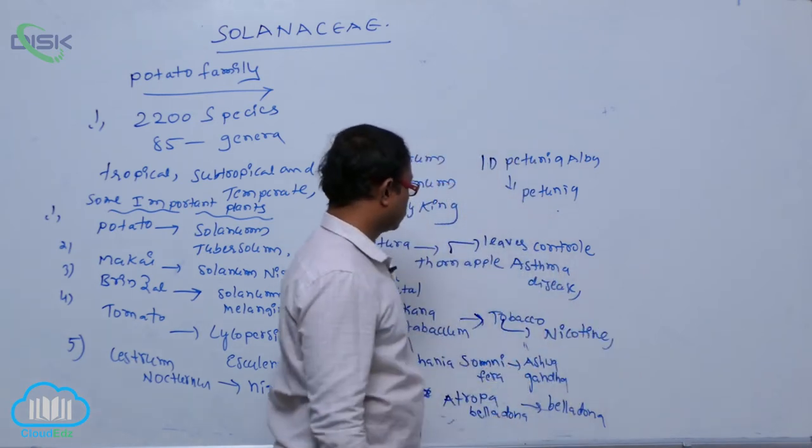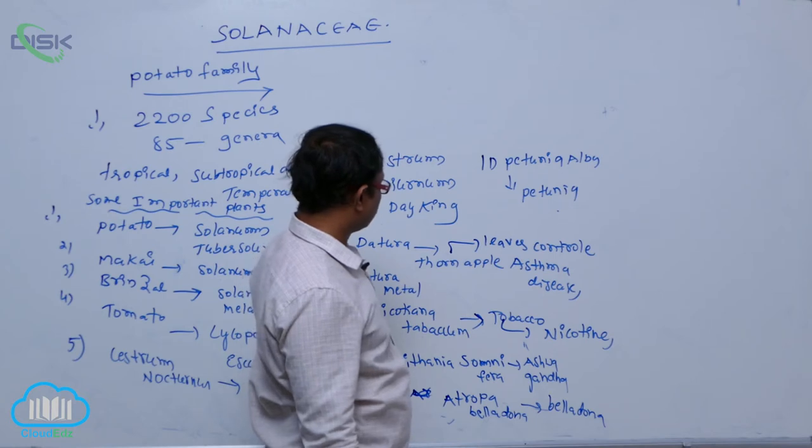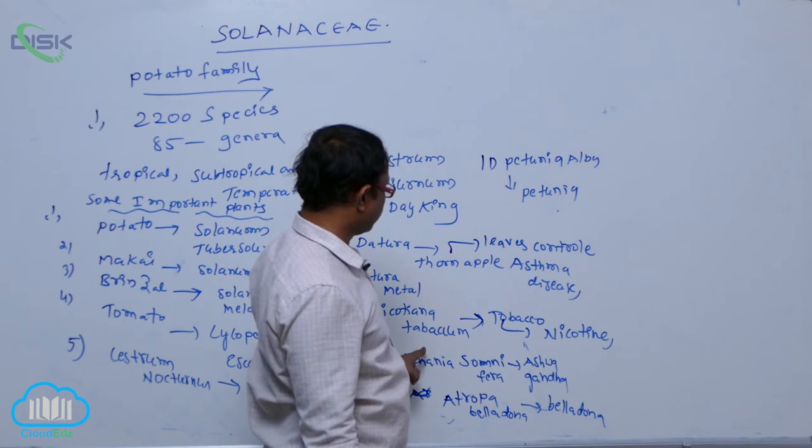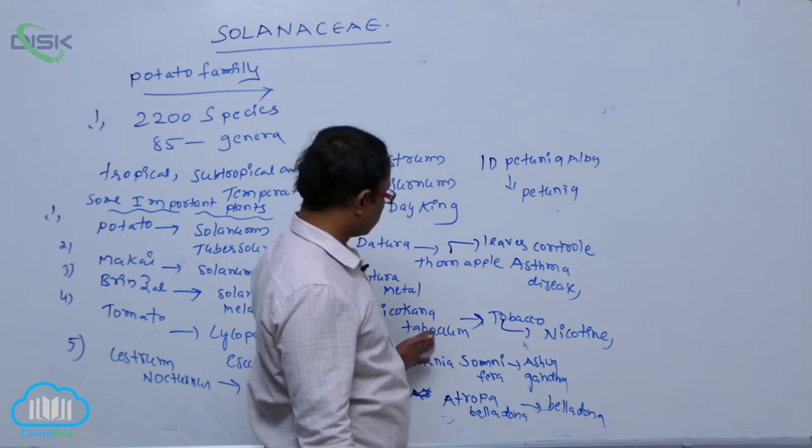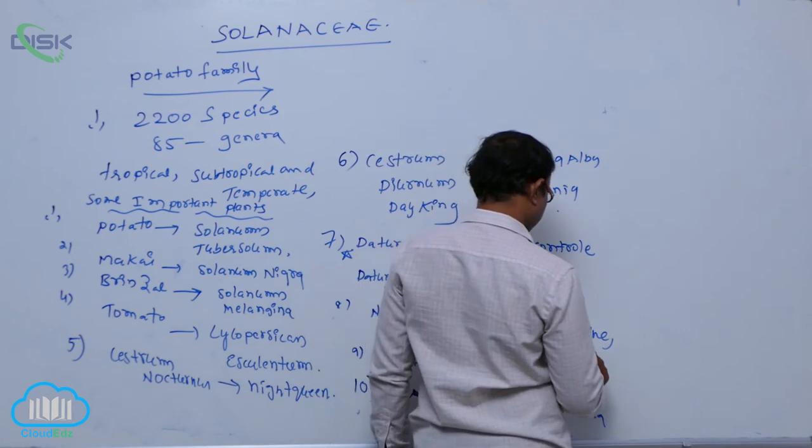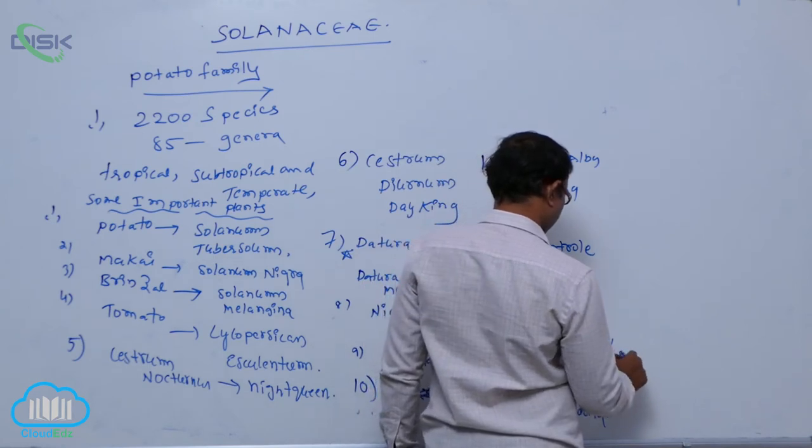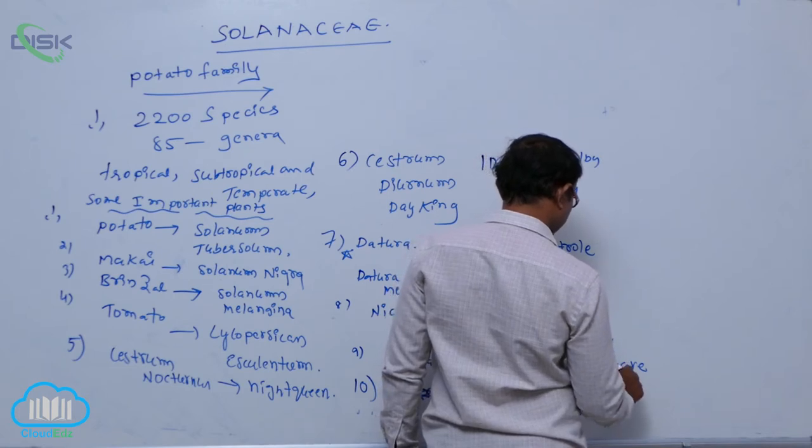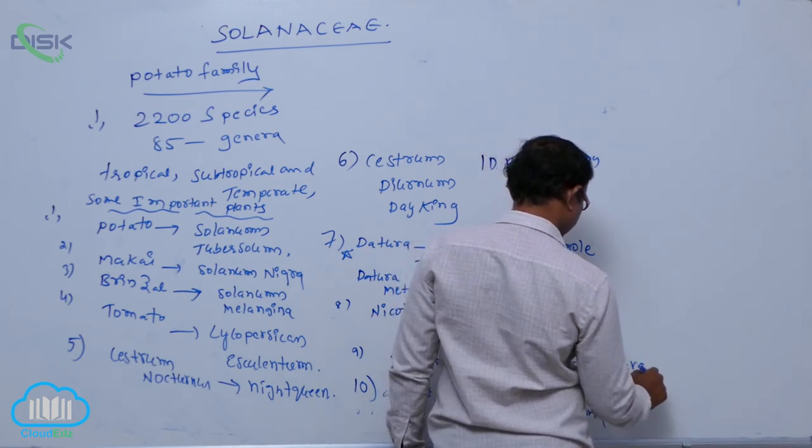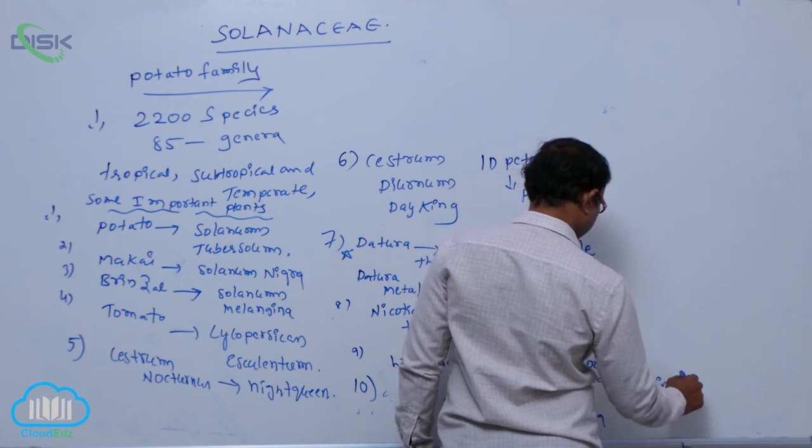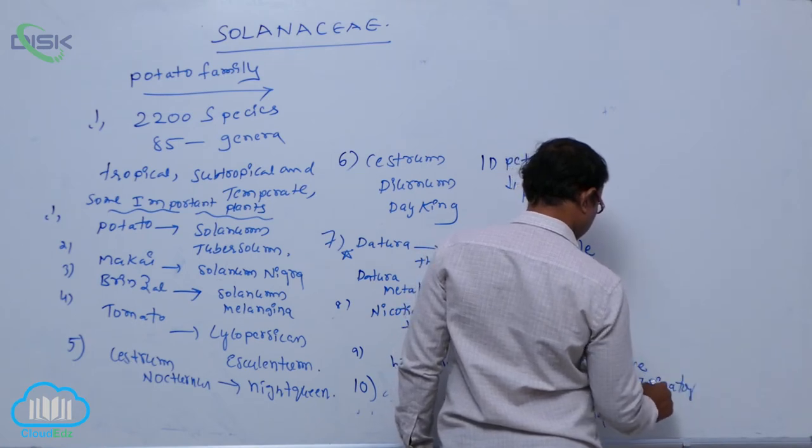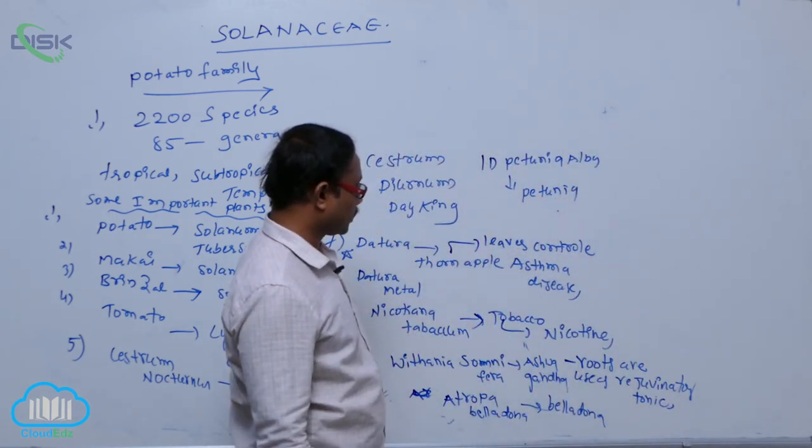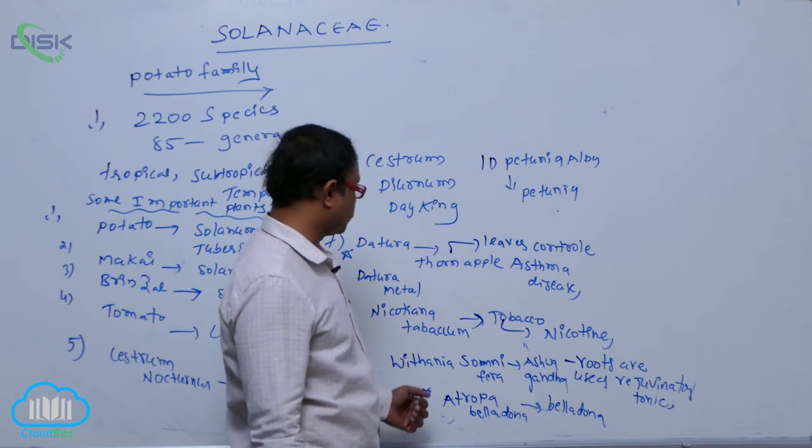Due to the presence of nicotine alkaloid, it is used in the making of cigarettes. After that, Vitania Somnifera, Ashwagandha. These roots are used as a rejuvenatory tonic, providing energy and strengthens.